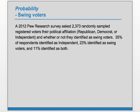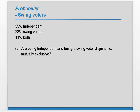In 2012, a Pew Research Survey asked 2,373 randomly sampled registered voters their political affiliation and whether or not they identified as swing voters. Here we have the results: 35% identified as independent, 23% as swing, and 11% as both.